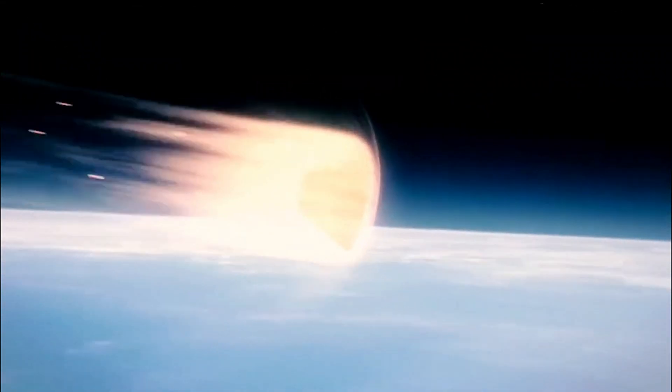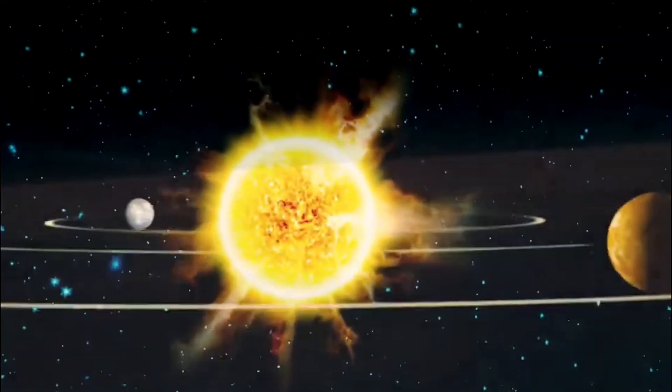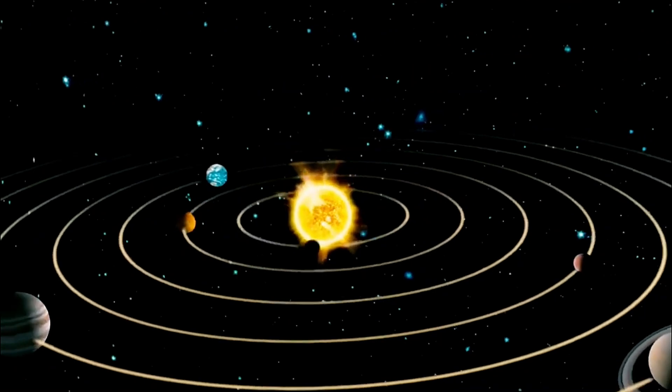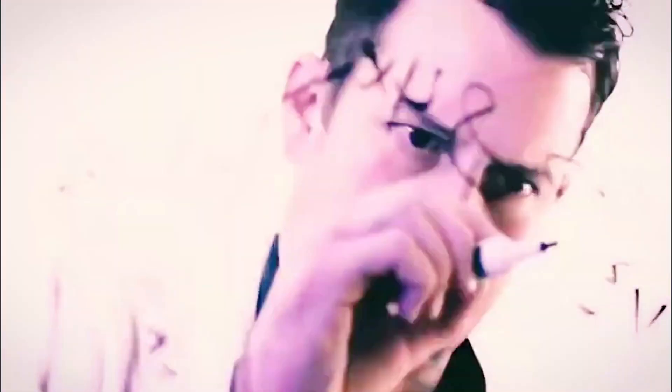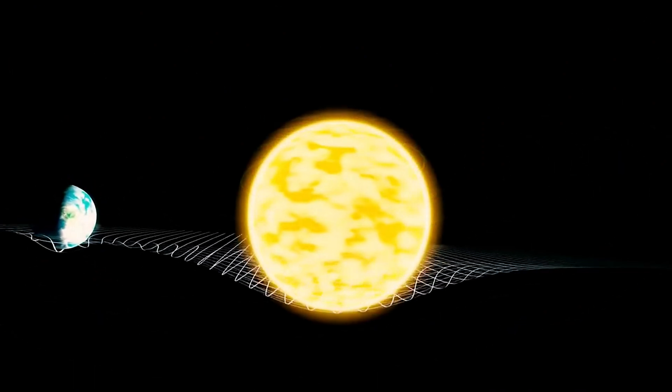Before Einstein's epoch-making theory, gravity was perceived as a mysterious force that kept planets in orbit and apples falling to the ground. Sir Isaac Newton's laws of gravity had served humanity well for centuries, but questions lingered.